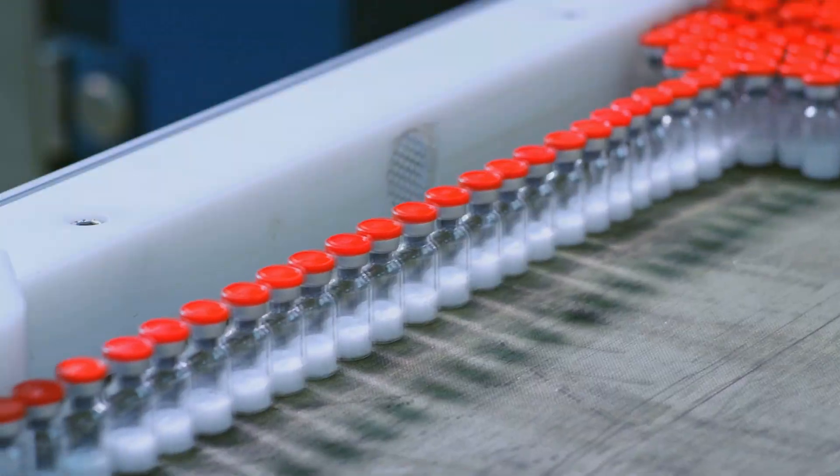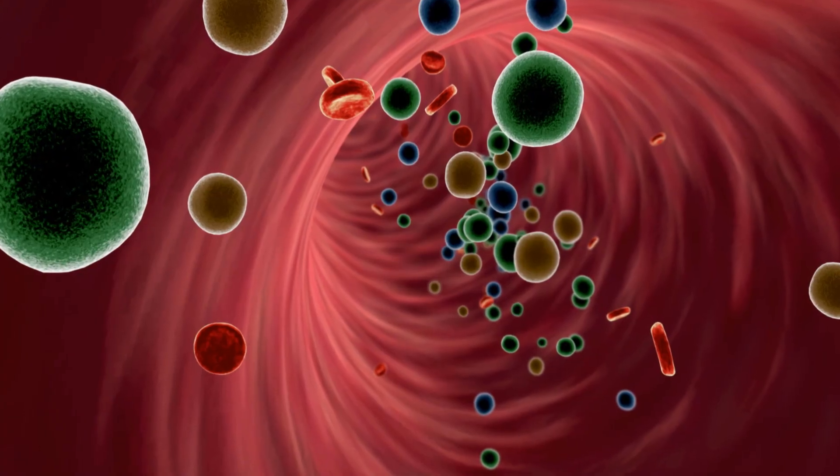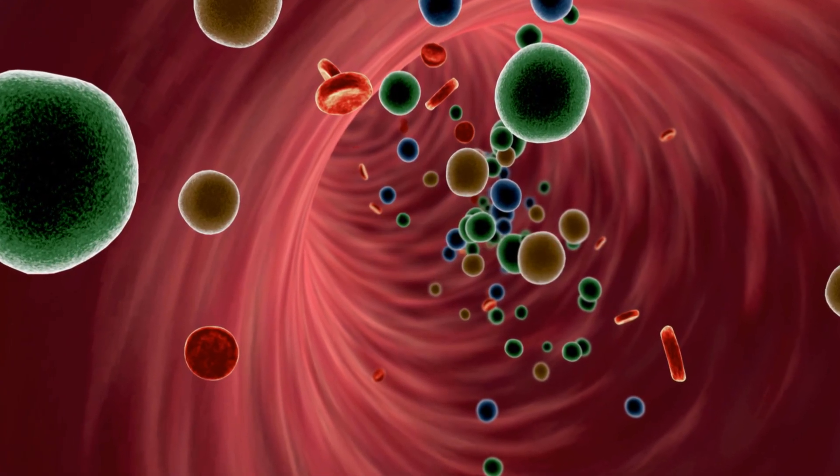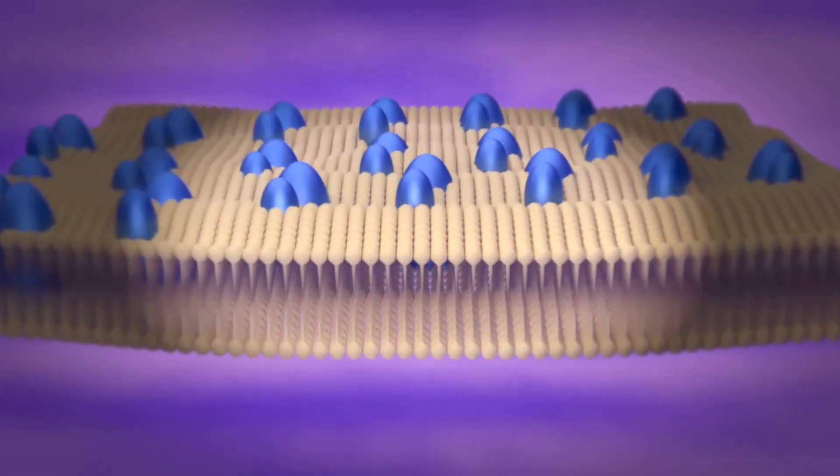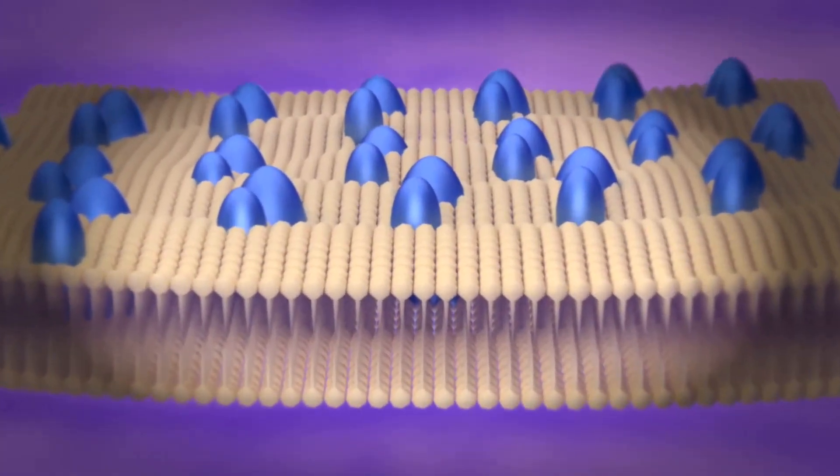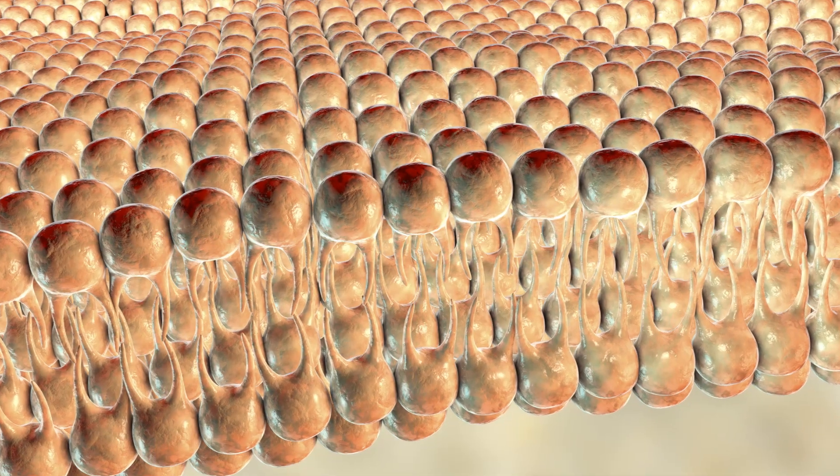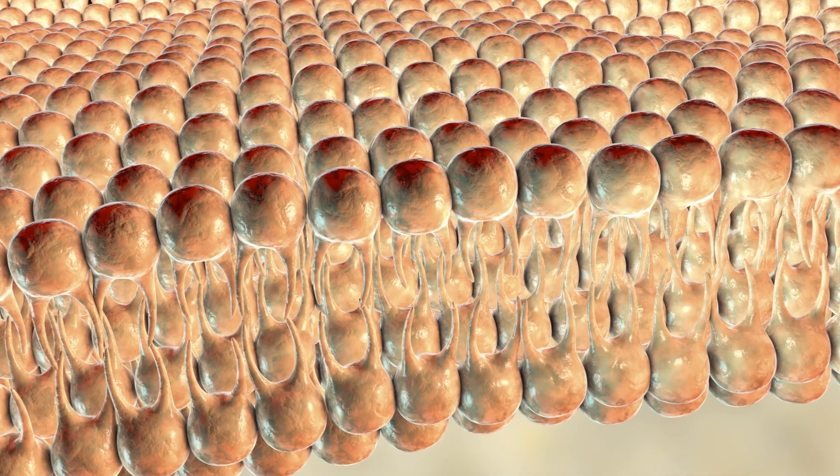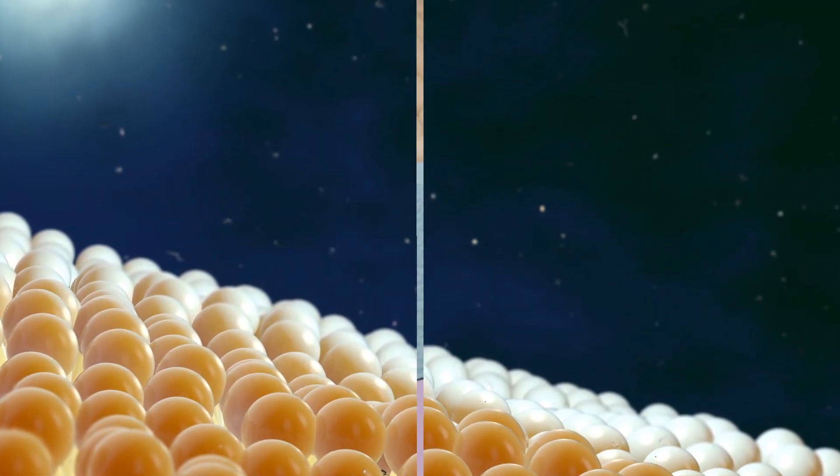Several factors influence a drug's ability to permeate cell membranes. One crucial factor is the drug's lipophilicity, or its affinity for fats. Cell membranes are primarily composed of lipids, so drugs with a higher lipophilicity can more readily dissolve into and pass through these membranes. Conversely, hydrophilic drugs, those with an affinity for water, face greater difficulty in penetrating these lipid barriers.